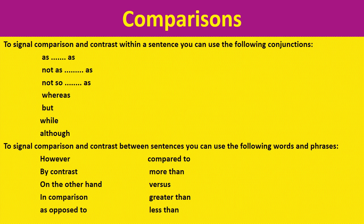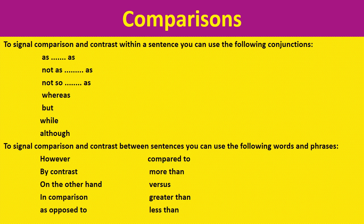To signal comparisons and contrast within a sentence you can use the following conjunctions: as...as (e.g., as long as, as high as, as good as); not as...as; not so...as — filling in any adjective. Also: whereas, but, while, although. To signal comparison and contrast between sentences use: however, by contrast, on the other hand, in comparison, as opposed to, compared to, more than, versus, greater than, or less than.